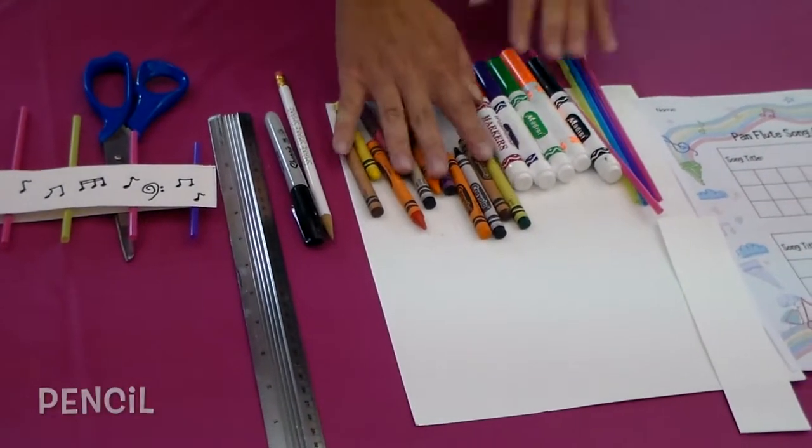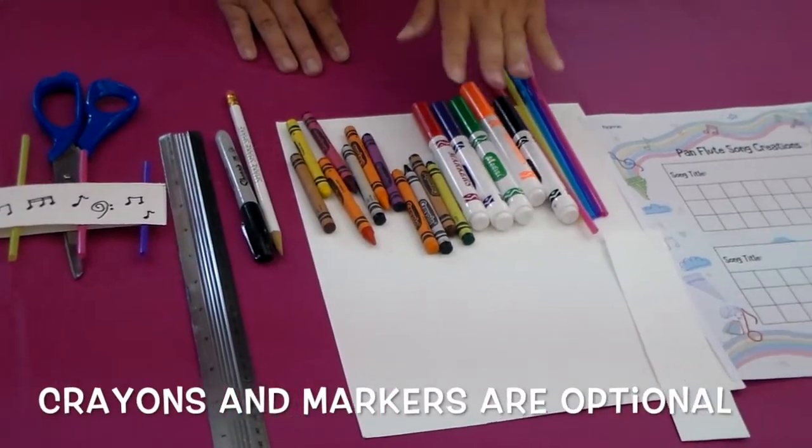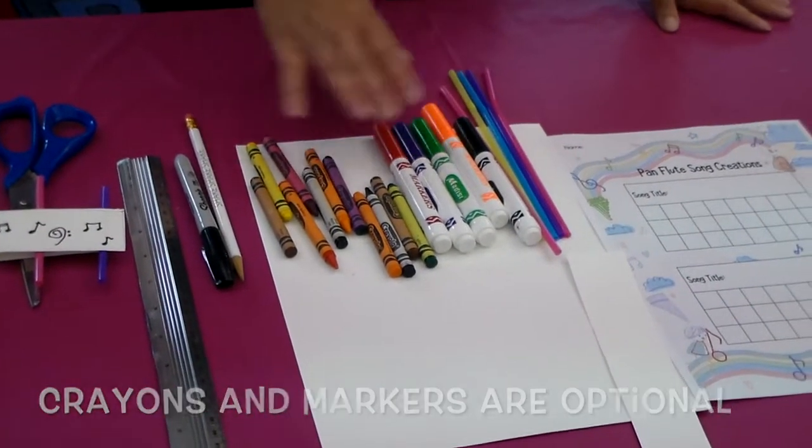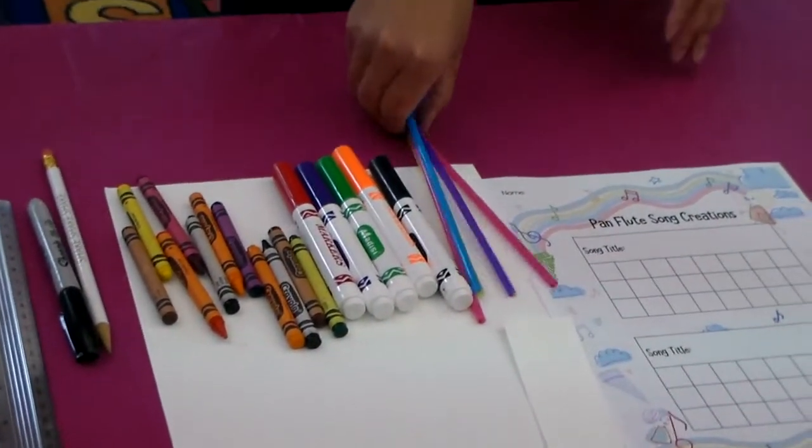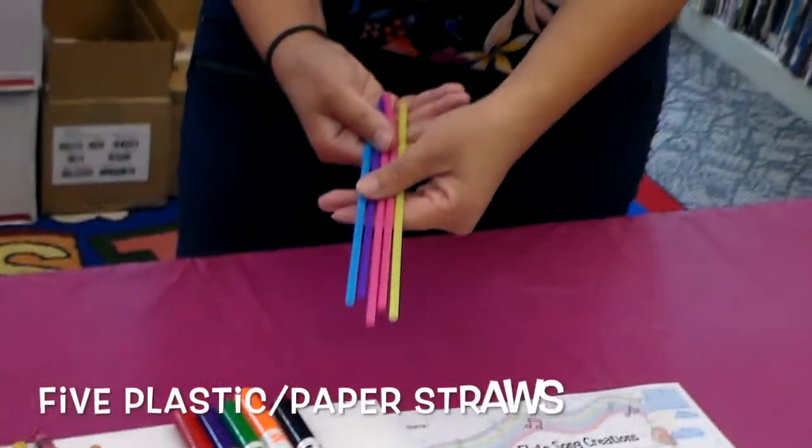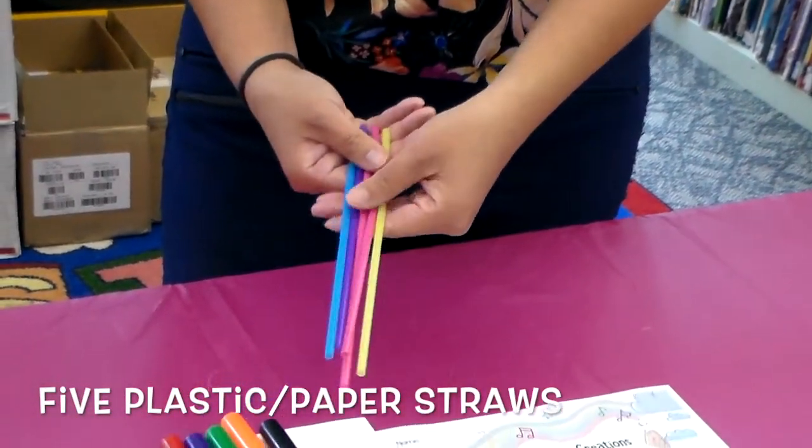Pencils, crayon and markers are optional. If you don't have one that's okay or if you have one of the other that's also okay. And then you need five plastic straw or paper straw. It's up to you.